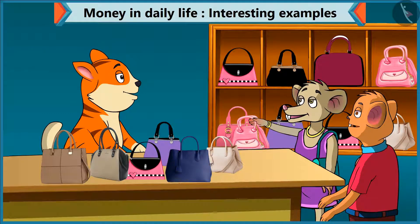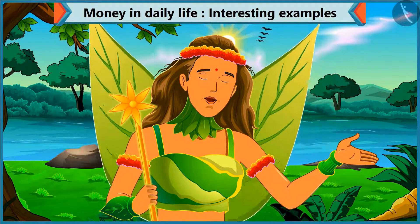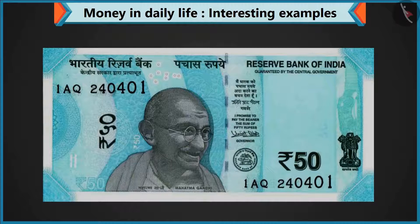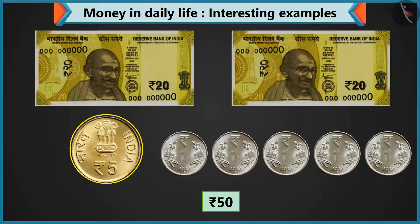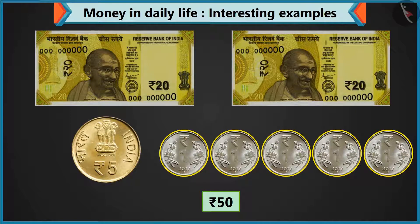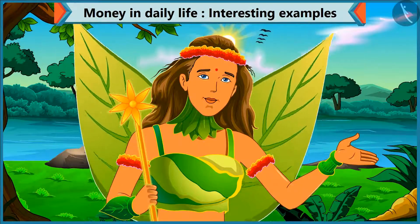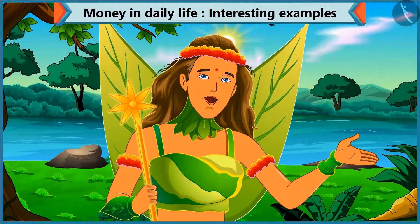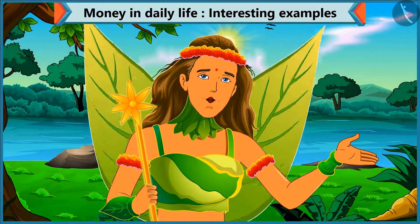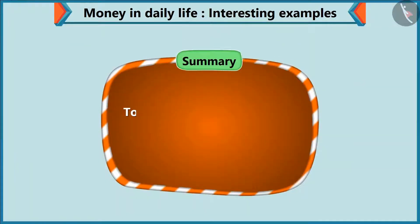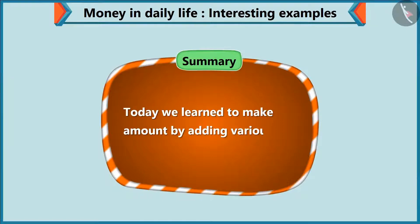Chi Chi, let's go home now. Yes, let's go. So kids, you saw that you can pay 50 rupees by adding a note of 50, or 2 notes of 20, a coin of 5, and 5 coins of 1 rupee. You can also make 50 rupees from different notes and coins. Today, Chi Chi bought a purse and a pastry for her mother. So today, we learned to make an amount by adding various notes and coins.